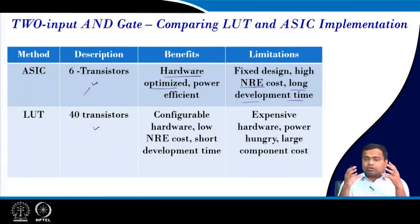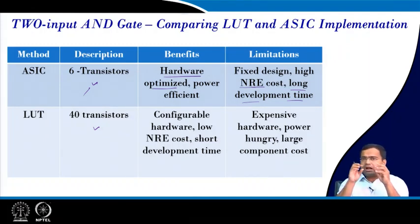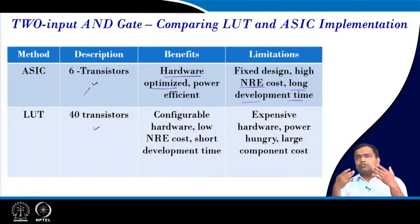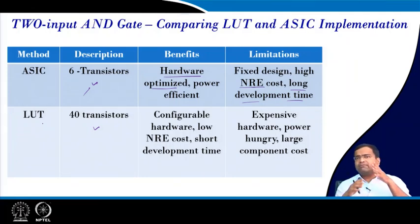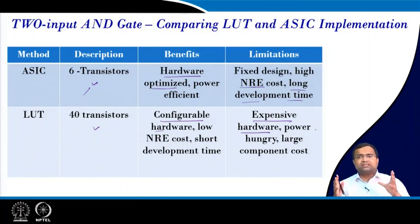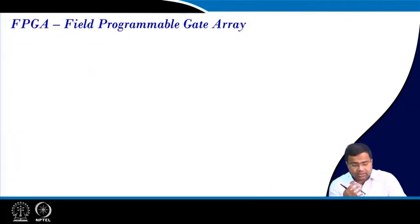But if you go for mass production — making millions of such ASICs — the per-unit cost will be much lower than lookup table-based implementation. In general, the non-recurring cost is high and development time is also long for ASIC. But the benefit is it is hardware-optimized and power-optimized. That is why in microcontrollers there are ASIC cells — dedicated hardware blocks for addition, multiplication — which are only used for those specific operations, allowing optimization in transistors and power efficiency.